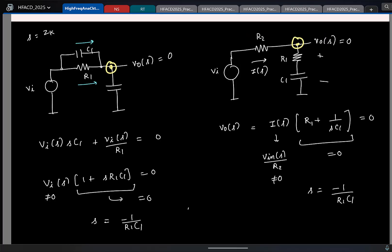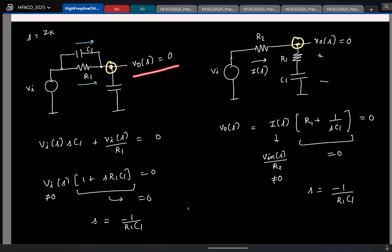And finding the location of zero is trivial, you just assume that the output in the Laplace domain is zero and then you write KCL and solve for the complex frequencies for which this condition that the output in the Laplace domain is zero.